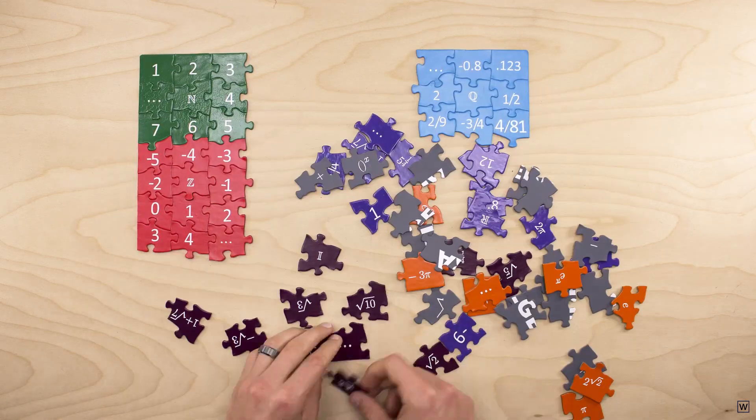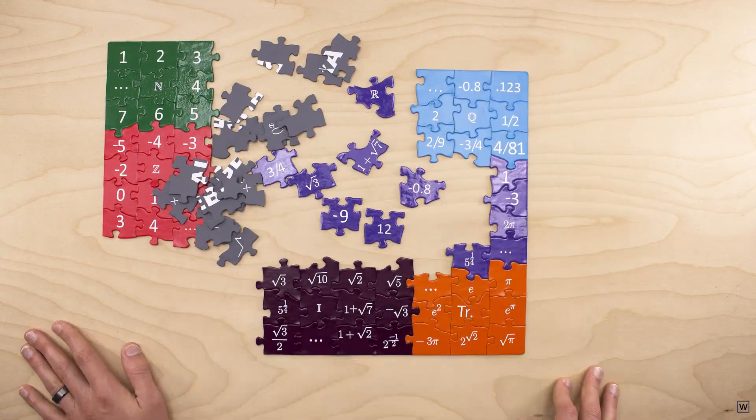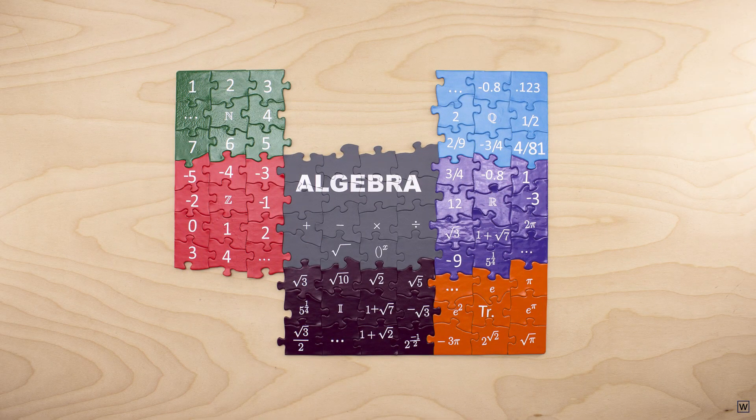Before we finish up our series and solve our problem from Part 1, let's talk about how complex numbers are the missing puzzle piece that make algebra complete.